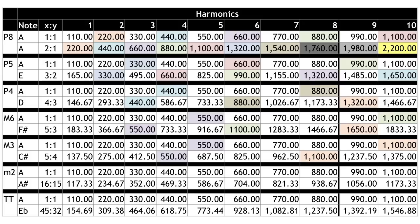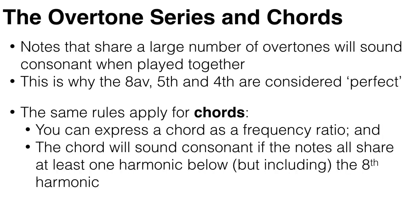This incidentally is why the octave, fifth, and fourth are considered perfect — they are the most consonant intervals per the overtone series. The next most consonant intervals are the major third and major sixth, and the most dissonant intervals are the minor second and tritone. Also keep in mind that this is using just intonation or just tuning — we'll discuss other tuning systems in future videos.